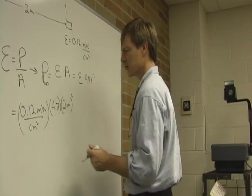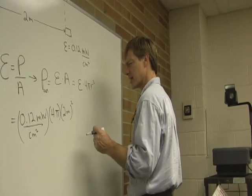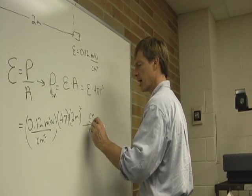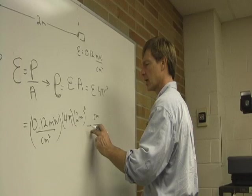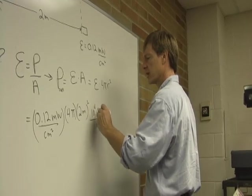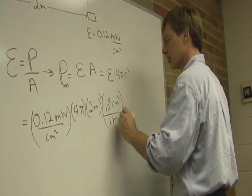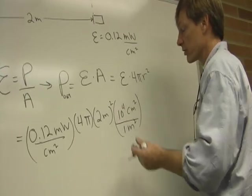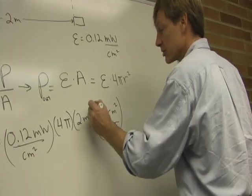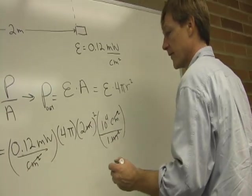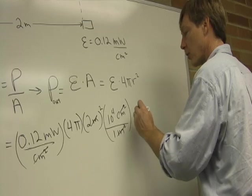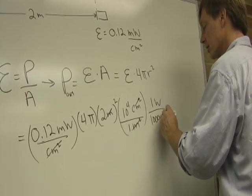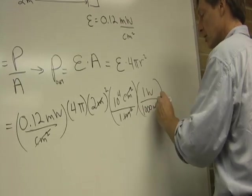I'm going to have meters squared and centimeters squared. So I want centimeters on top, meters on the bottom. There are 10 to the 2. So there are 10 to the 4 centimeters squared per meter squared. 10 to the 2, 100 centimeters per meter. If I square it, I get 10 to the 4. Centimeters squared per meter squared. Centimeters squared and meters squared cancel out. And I'll convert it to watts, too. There is 1 watt for every 1,000 milliwatts.